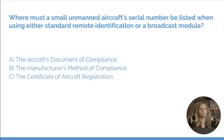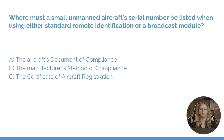Where must a small unmanned aircraft serial number be listed when using either standard remote identification or a broadcast module? Either A, the aircraft's document of compliance. B, the manufacturer's method of compliance. Or C, the certificate of aircraft registration. Our answer here is C — we want to have that serial number listed on the certificate of aircraft registration.